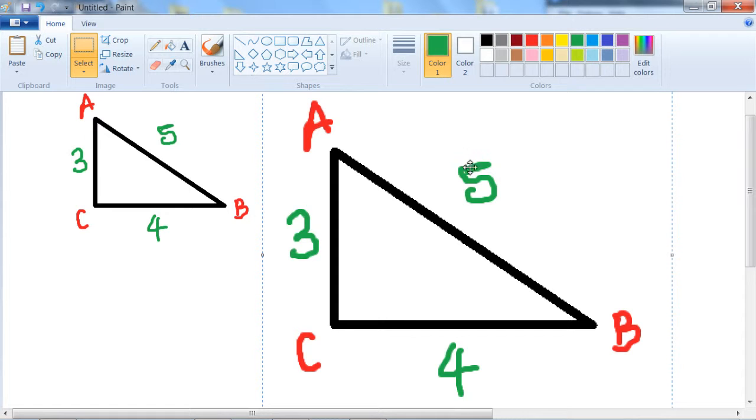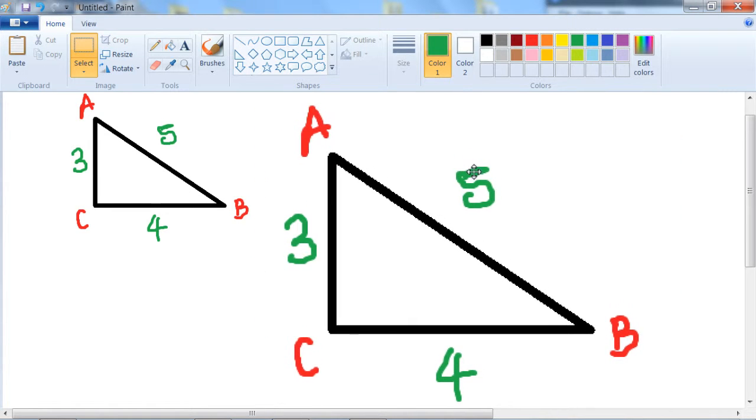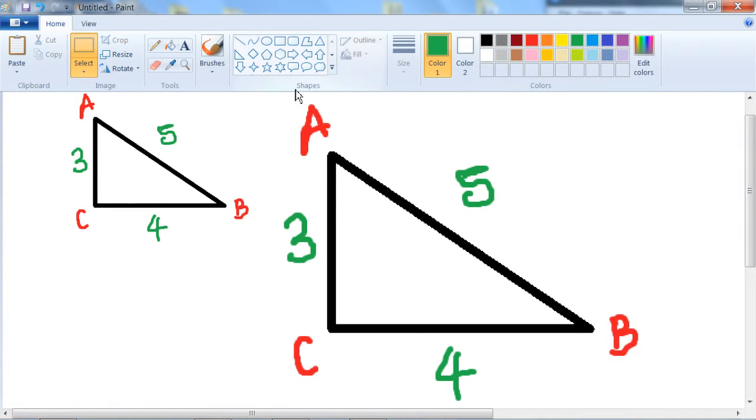Now obviously these numbers are not correct anymore, so let's put in what they actually are. Well it's twice as big so this is going to be 10, this is going to be 8 and this is going to be 6.